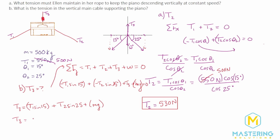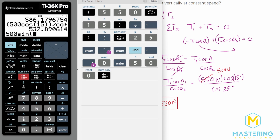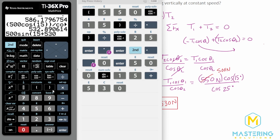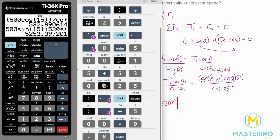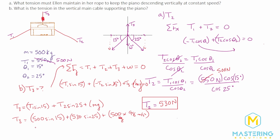Plugging in: T3 equals T1 (500 N) times sine of 15, plus T2 (530 N) times sine of 25 degrees, plus the weight which is mass (500 kg) times 9.8 meters per second squared. Computing that gives approximately 5253 newtons, which we round to 5300 newtons for two significant figures. So the tension in the vertical rope, T3, is 5300 newtons.